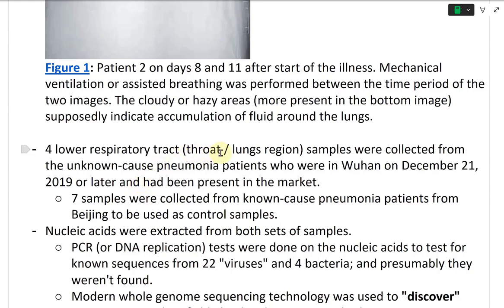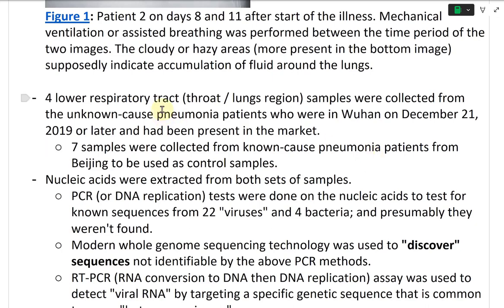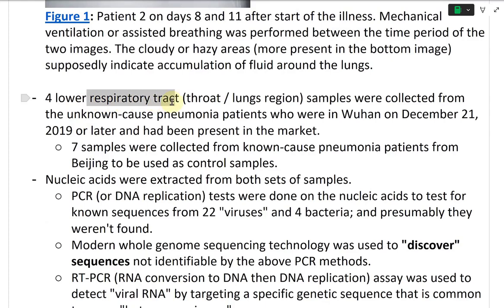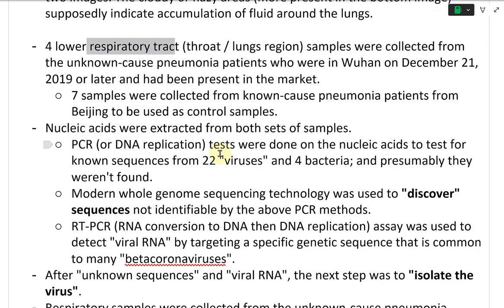For lower respiratory tract samples, these were collected from unknown-cause pneumonia patients who were in Wuhan on December 21, 2019 or later and had been present at the market. Seven samples were collected from known-cause pneumonia patients from Beijing as control samples. Nucleic acids were extracted from both sets, and PCR tests were done to test for known sequences from 22 viruses and four bacteria — presumably they weren't found in the Wuhan samples.